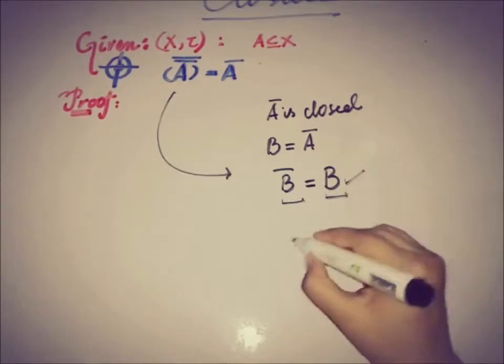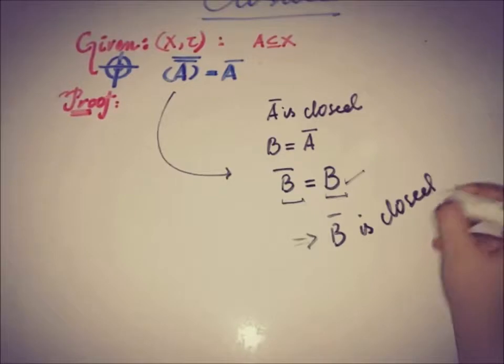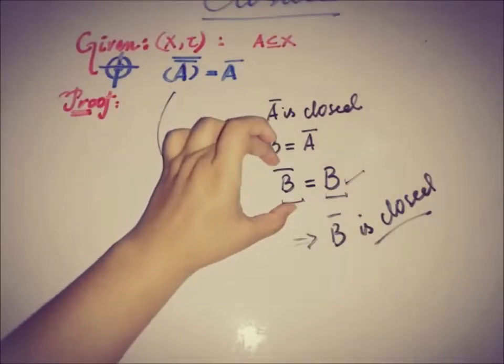Eventually this implies that B closure is closed. So our proof is complete because the closure of the closed set is already equal to a closed set B.